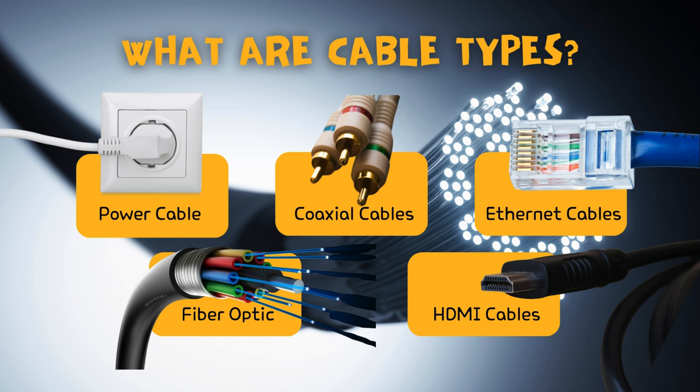3. Ethernet cables. Ethernet cables, also known as network cables or LAN cables, are specifically designed for transmitting data within local area networks. These cables utilize copper or fiber-optic conductors and come in various categories, such as CAT5, CAT6, and CAT7, each offering different speeds and bandwidth capabilities.